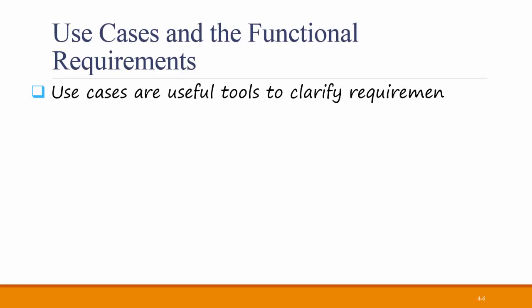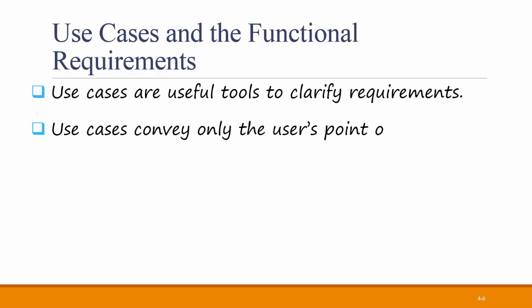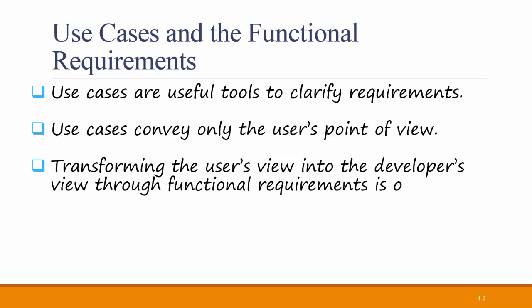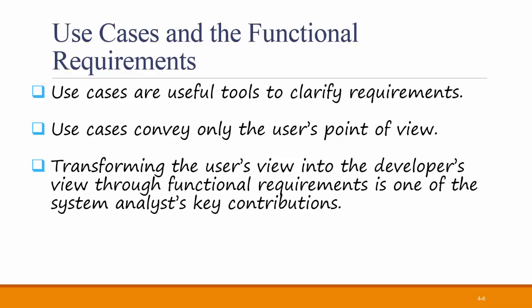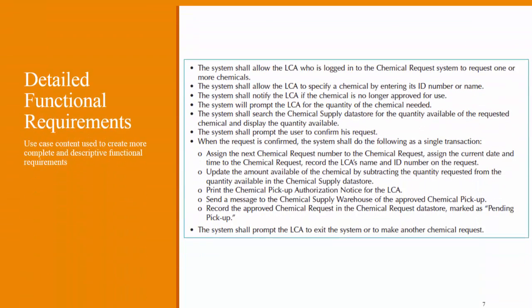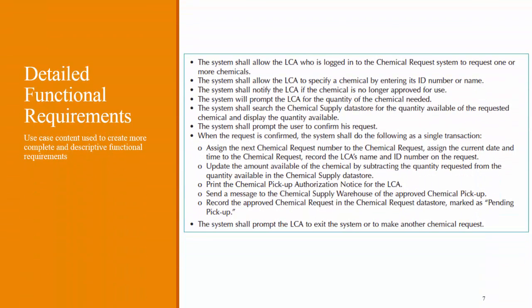Use cases are useful tools to clarify requirements for the system. Use cases convey only the user's point of view, but transforming the user's view into the developer's view through functional requirements is one of the best ways that the systems analyst can ensure that the system's requirements meet the user's needs. The derived functional requirements tell the developers more about what the system must do from the user's perspective. Here's an example of a set of functional requirements created as a result of the use cases that the analyst created in the textbook in Chapter 4.